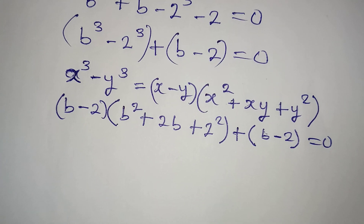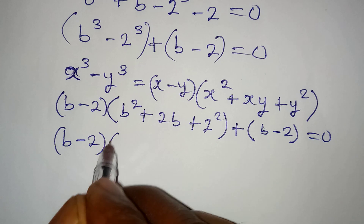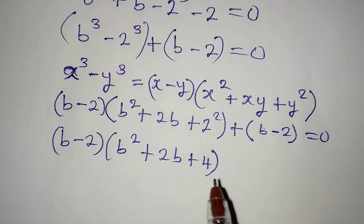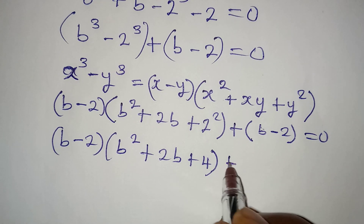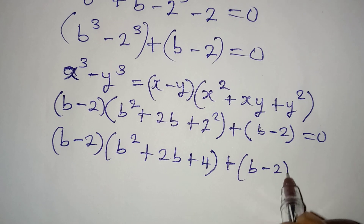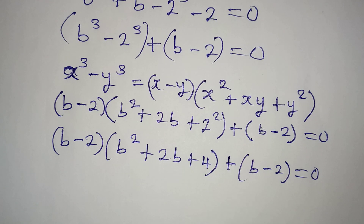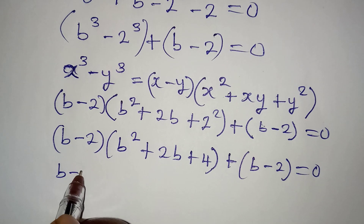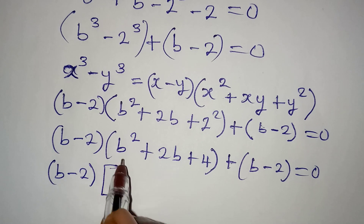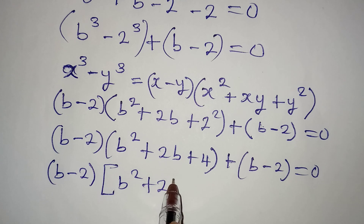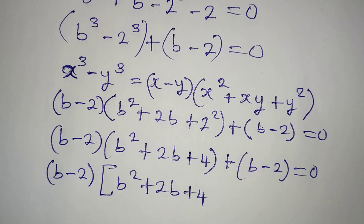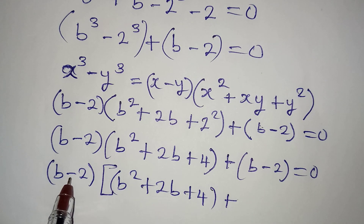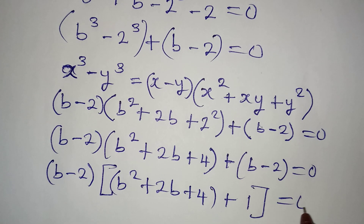From here we have b minus 2, times b squared plus 2b plus 4, plus the bracket b minus 2, equal to 0. Now I am going to factor out b minus 2 since it belongs to both terms. So b minus 2 is the common factor, and inside the second bracket we divide b minus 2 by b minus 2 to get 1, giving us b minus 2 times the quantity b squared plus 2b plus 4 plus 1, equal to 0.